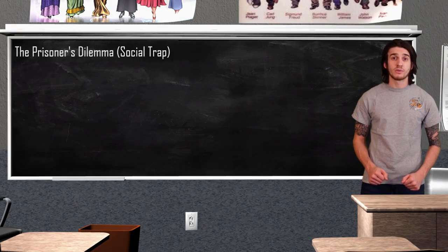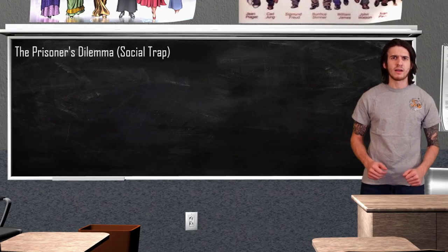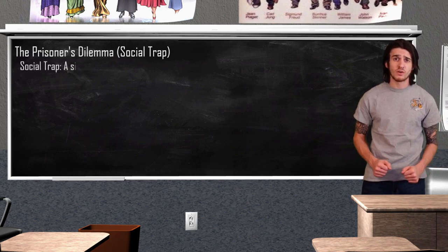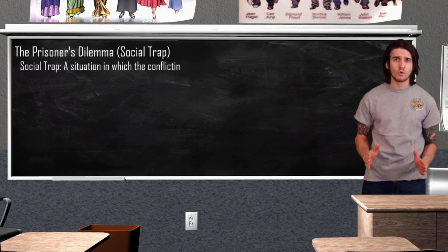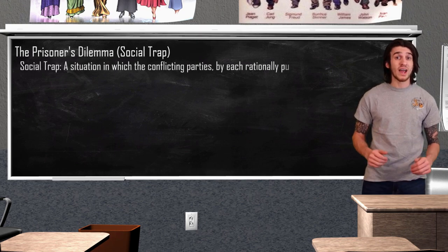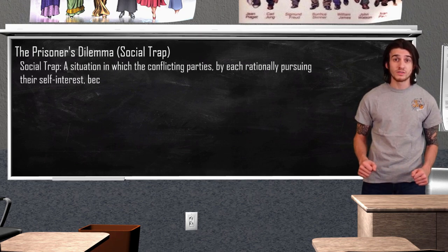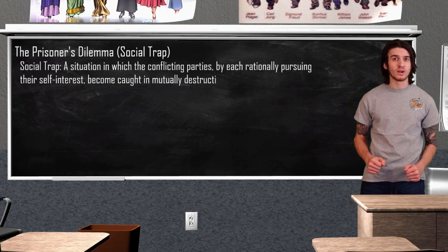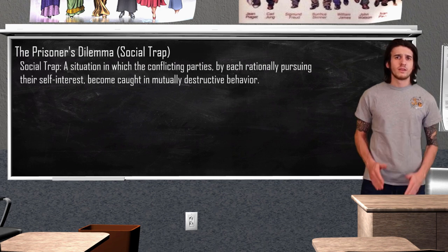Before we get into the prisoner's dilemma, it is important that we get some background information on what exactly a social trap is. A social trap is any situation in which two or more conflicting parties, by each rationally pursuing their own self-interest, become caught up in mutually destructive behavior.